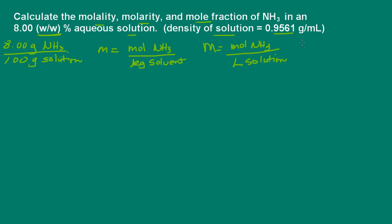And finally, the mole fraction of ammonia would be given by the moles of ammonia in the solution, divided by the total number of moles of solution. So that would be, in this case, moles of ammonia plus moles of water.